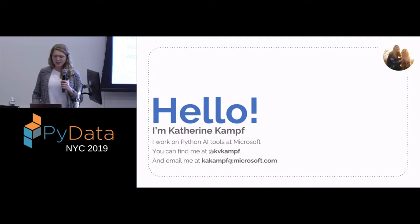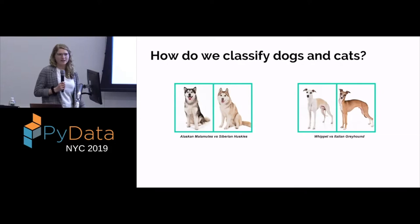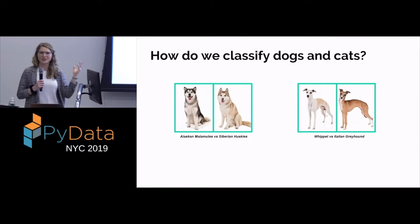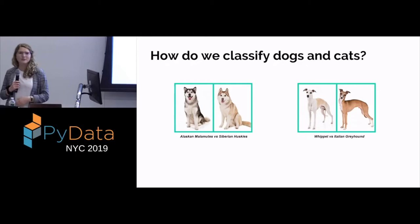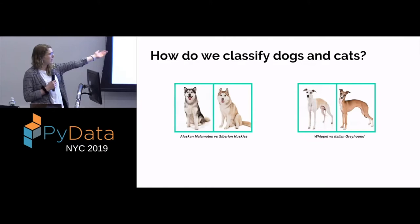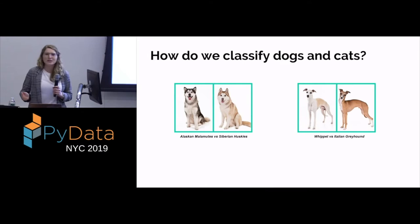Today we're going to be talking about how we classify dogs and cats. As humans, we've learned throughout our years what a golden retriever looks like versus a pug. Before machines, we have to try to teach them that. A pug and a golden retriever look completely different, but a Malamute and a Siberian Husky or a Whippet and a Greyhound can look pretty similar.